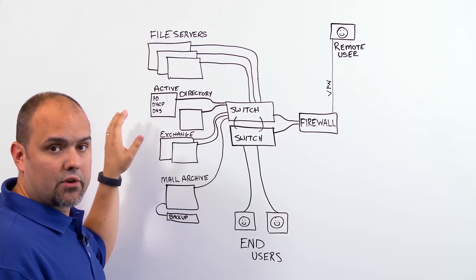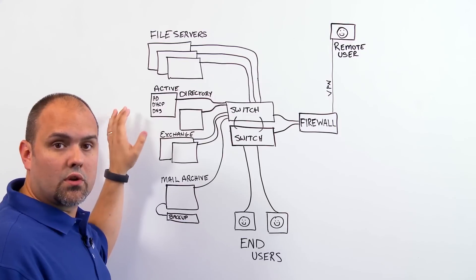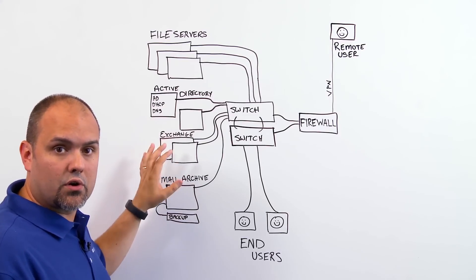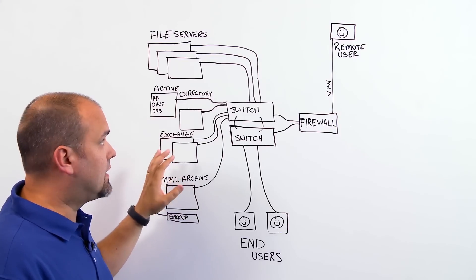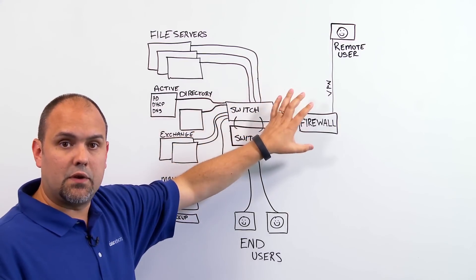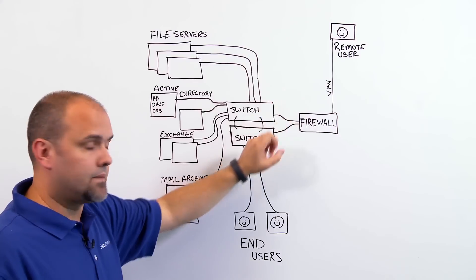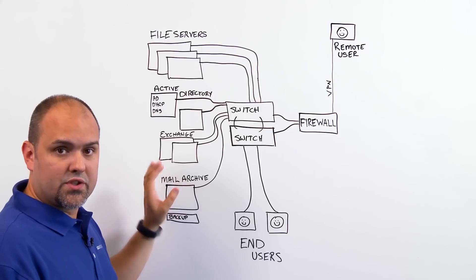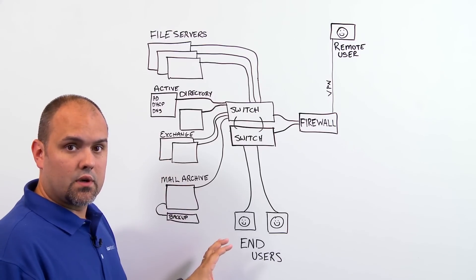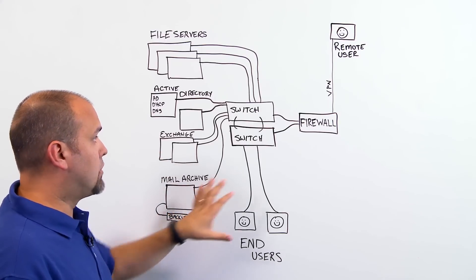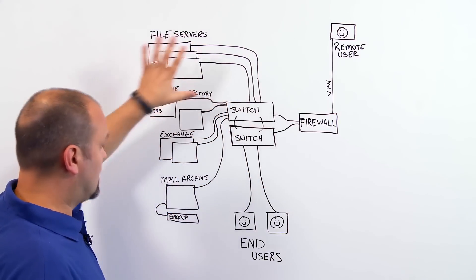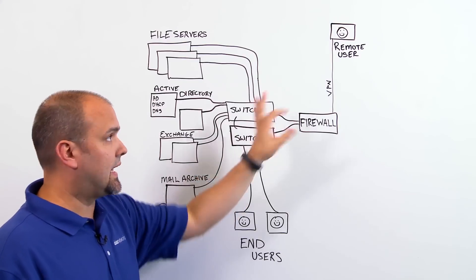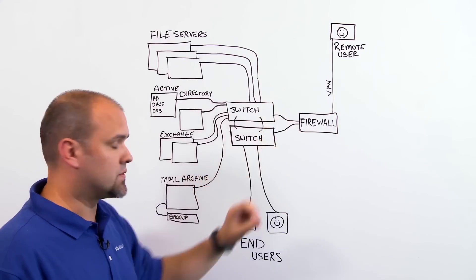Second, you have Active Directory, which controls all of your users and your authentication both internally and for your remote users utilizing VPN coming in. You also have your Exchange server, which is your mail server used to communicate both internally across your environment as well as with clients and your external users.